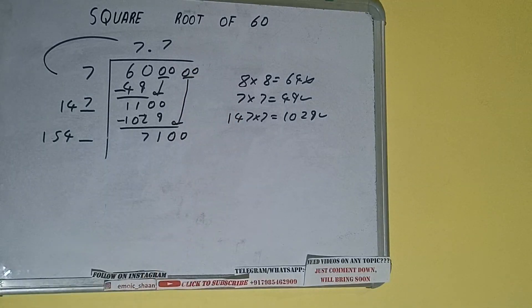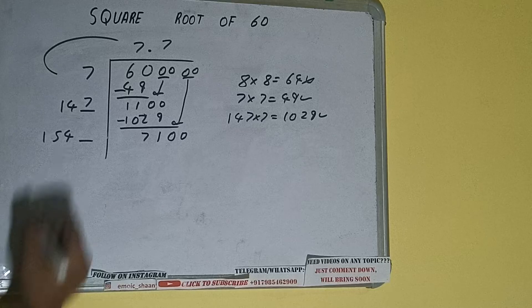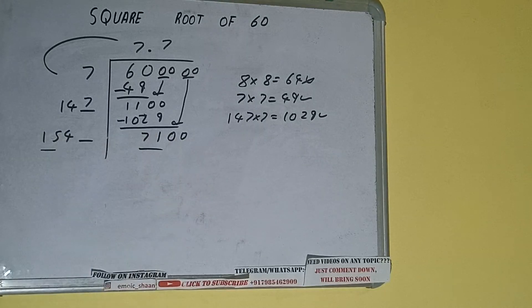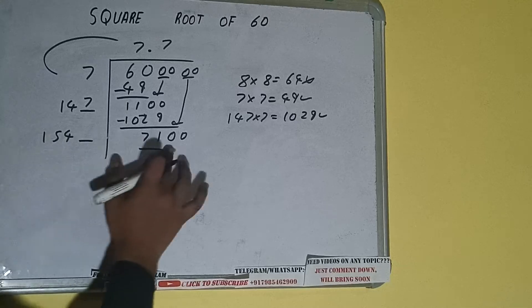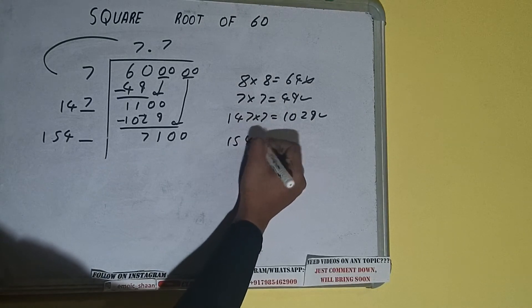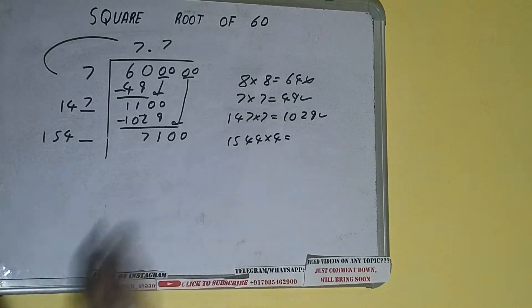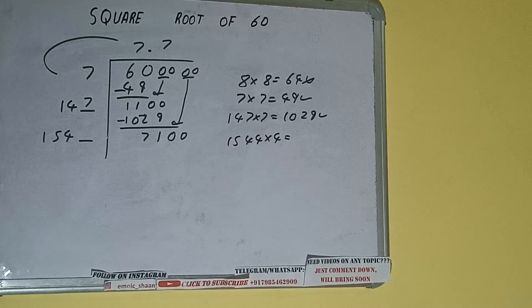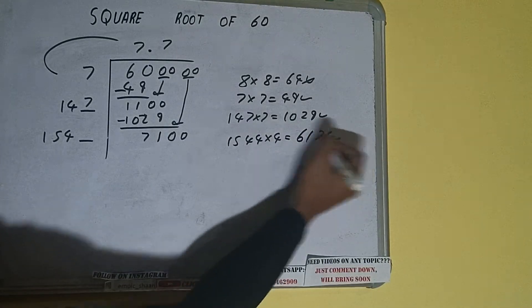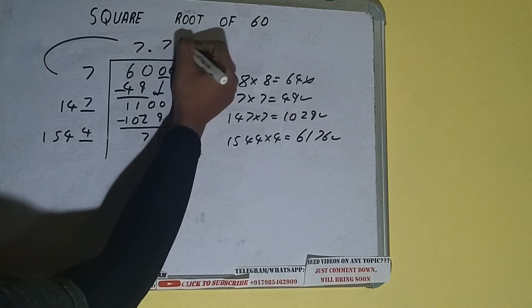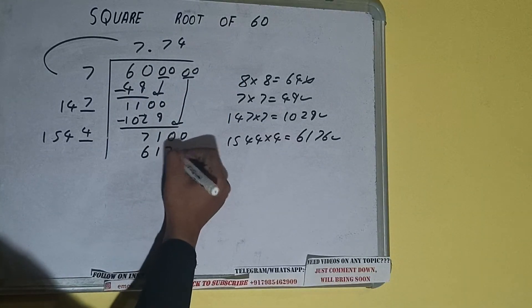Now compare this 15 with this 71. So 15 times 4 is 60, right? So we can try 4 times. 154 times 4 into 4 we can try, and we'll be getting 6176, which is good to take. So 4 here and 4 here, 6176.